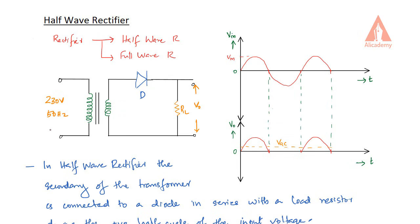In this circuit, we have a transformer. The input is 230VAC, and the transformer will convert this to a low-voltage AC. The transformer secondary will give us a low-voltage output — for example, 12VAC.